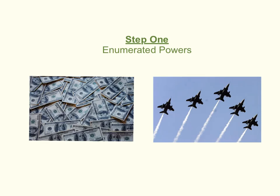So let's get started with the enumerated powers. The enumerated powers are powers that are specifically listed in the Constitution — they're actually written down and stated as powers of Congress. These can be found in Article 1, Section 8 of the Constitution. There are many enumerated powers, but two common ones are the power to declare war and the power to collect taxes.